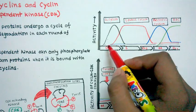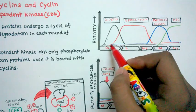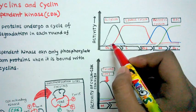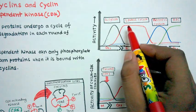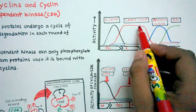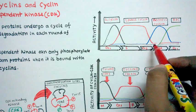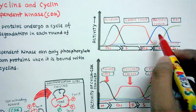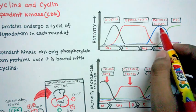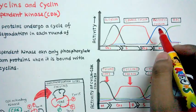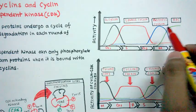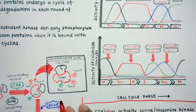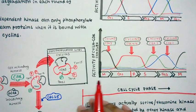The S phase cyclin is produced at the end of G1 or the beginning of S phase, and it is most active during S phase. After S phase its level again falls. Similarly for the mitotic cyclin and other cyclins, the same rule applies.